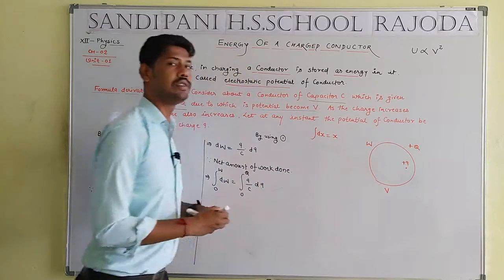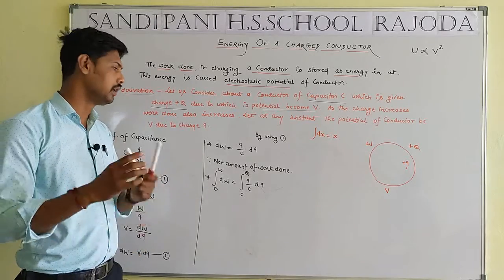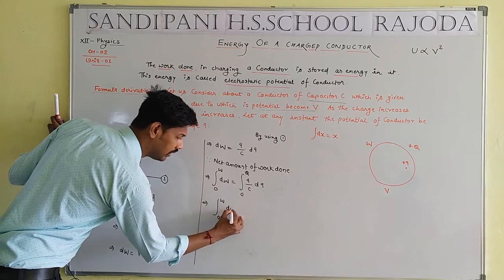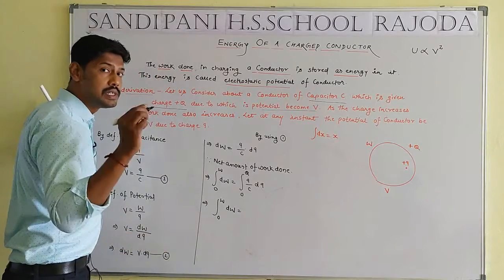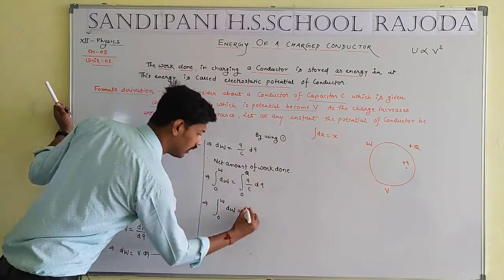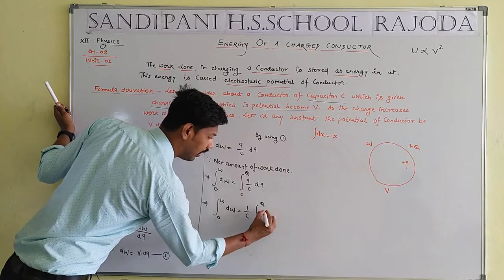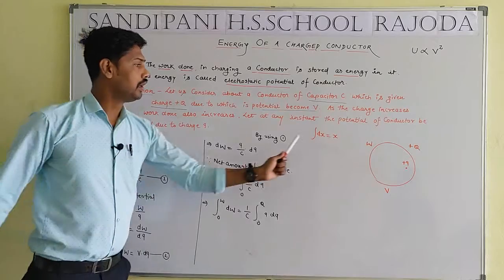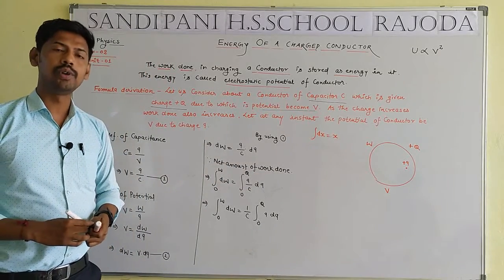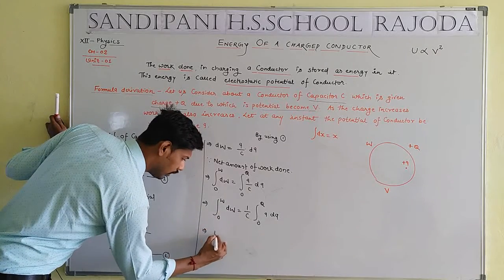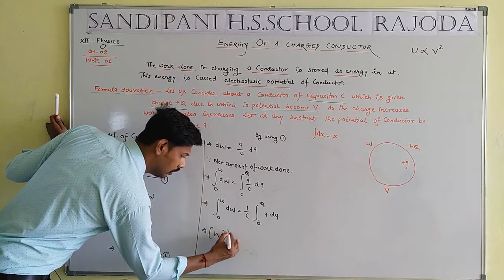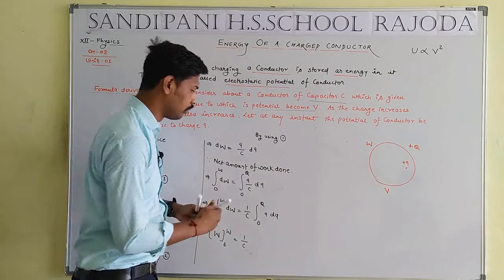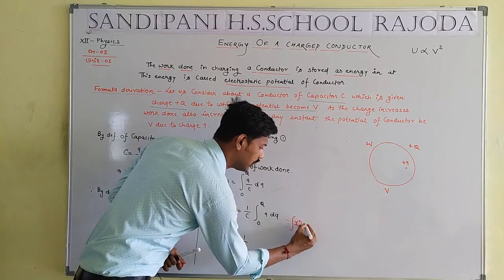Using the integration formula: integration of dX equals X, integration of dY equals Y. So integration of dW equals W. For the partial integration, Q is inside and 1 by C is a constant taken outside. Using the formula: integration of X to the power N dX equals X to the power N+1 divided by N+1.